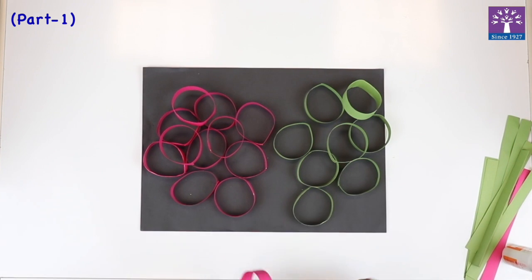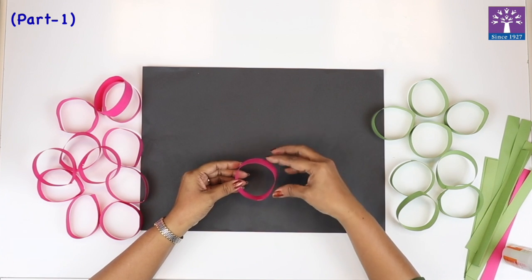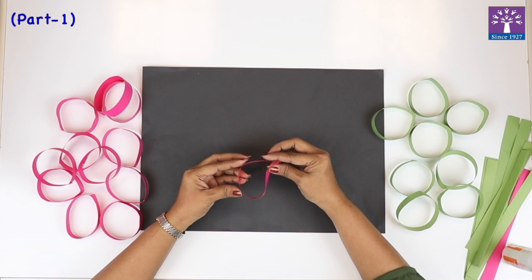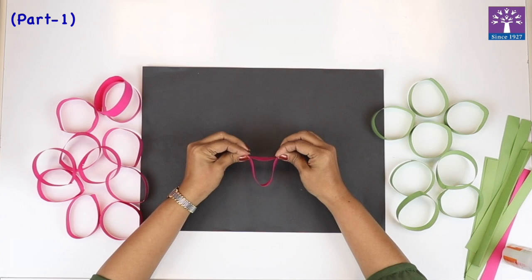So there, we have made circles. Now we will start giving shape to these circles. I want to make a flower, so I will use this pink circle to make a petal. I will pinch two sides like this. See, I've pinched this. I'll pinch here. I'll press this inside and pinch.